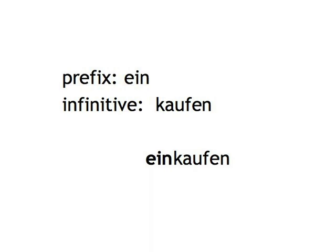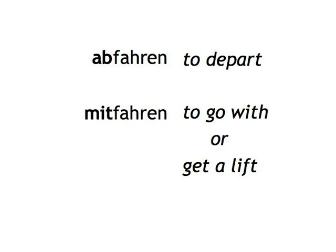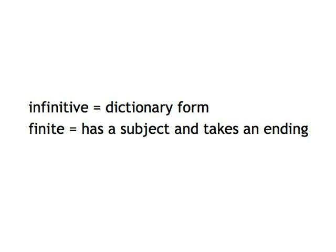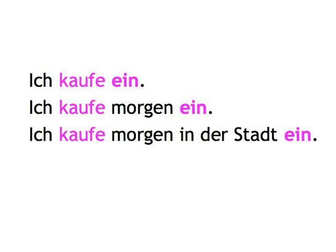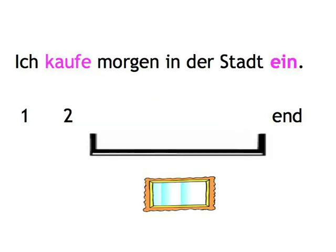Many verbs are a bit like Lego blocks and can combine with several different prefixes to form different meanings. So 'abfahren' means to depart, but 'mitfahren' means to go with or get a lift. Now, 'mitbringen' and 'einkaufen' are infinitives or dictionary forms. When one of these verbs becomes finite — in other words, it's actually done by someone and takes an ending — it splits into its two components. As you can see, the finite verb 'kaufe' is the second element. The other part, in this case the prefix 'ein,' goes right to the end of the sentence, forming a kind of verbal bracket or frame around all the other information.